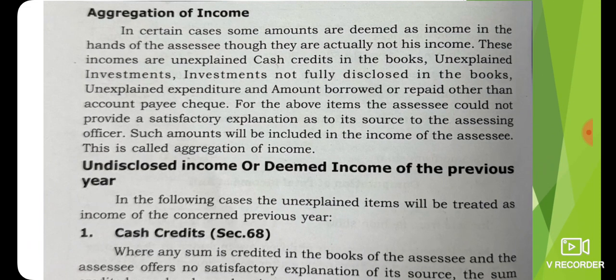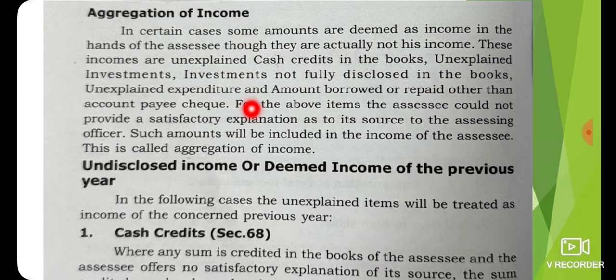In certain cases, some amounts are deemed as income in the hands of the assessee, though they are actually not his income. These include unexplained cash credits in the books, unexplained investment, investment not fully disclosed in the books, unexplained expenditure, and amounts borrowed or repaid on account payee cheque, etc.